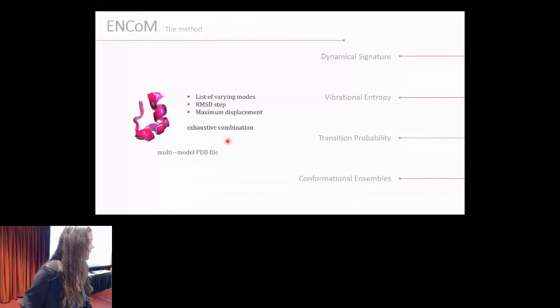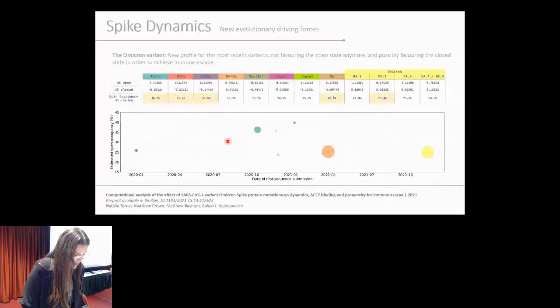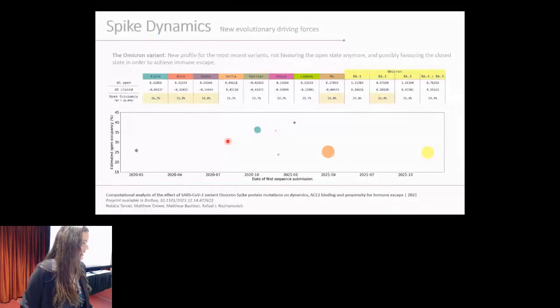The final function of ENCOM that I will be presenting is the conformational ensemble, which creates a multimodal PDB file with slightly different structures based on the distribution of those structures along this possible movement of residues. Why are we using that currently? Because when we checked for alpha, beta and gamma, we saw, and it was later proven experimentally as well, that they were actually having an increased open occupancy as we predicted.